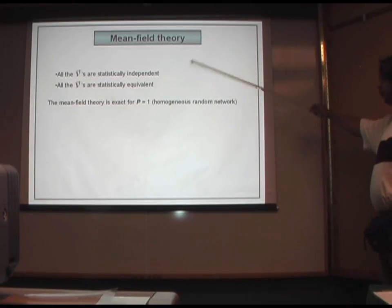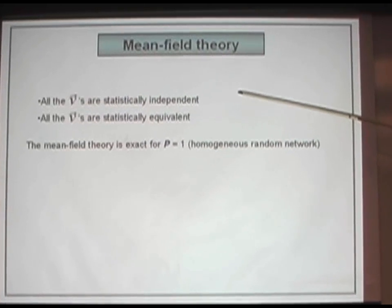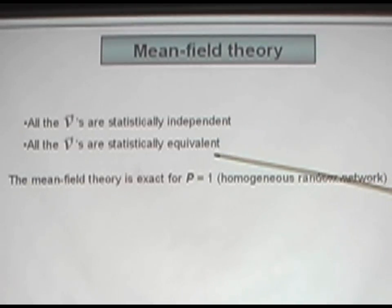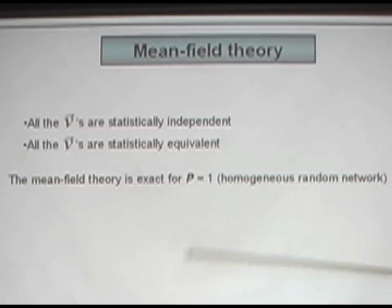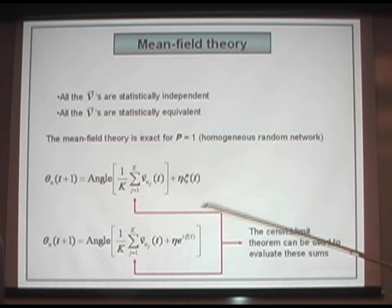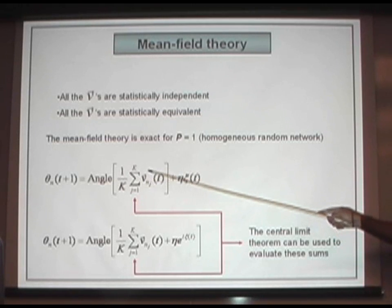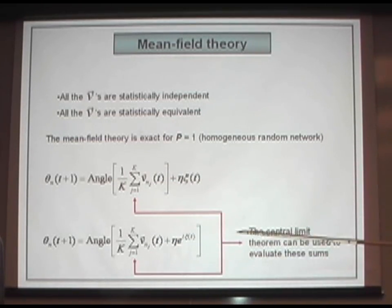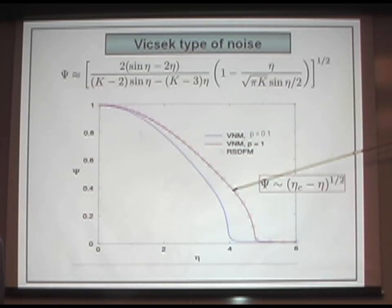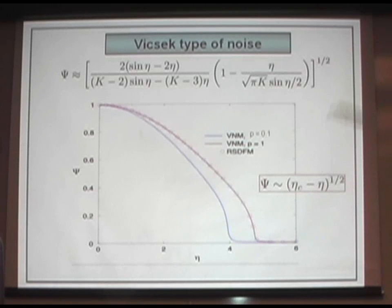At least in one case we are able to solve this analytically, and this is for the mean field theory. Two assumptions are required for the mean field theory to be applicable: that all the vectors are statistically independent, and all nodes are statistically equivalent. The mean field theory is exact for the case p equal 1 — the case in which all the particles are connected randomly. Because this is a sum of independent random variables equally distributed, we can use the central limit theorem to evaluate the probability distribution for the sums, and then compute the phase transition for the Vicsek type of noise. The phase transition is indeed continuous, and the phase transition exponent is one half, which is not a surprise because this is a mean field theory.